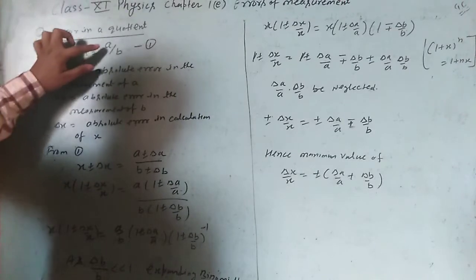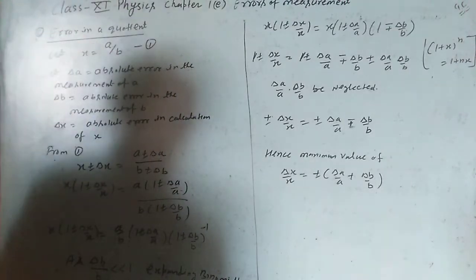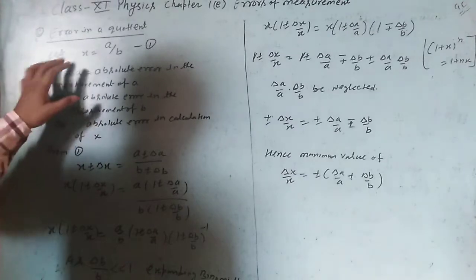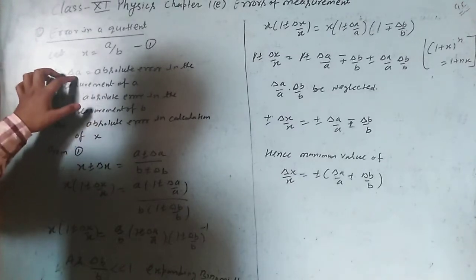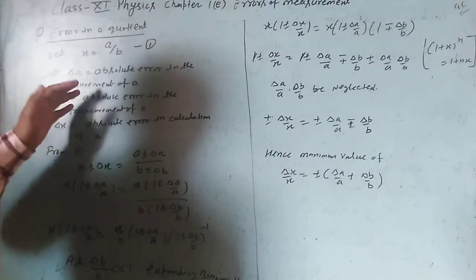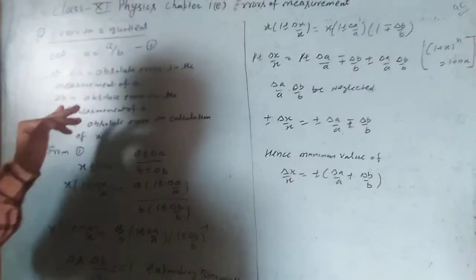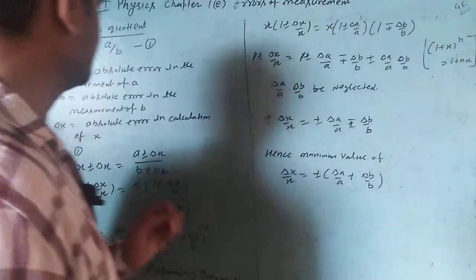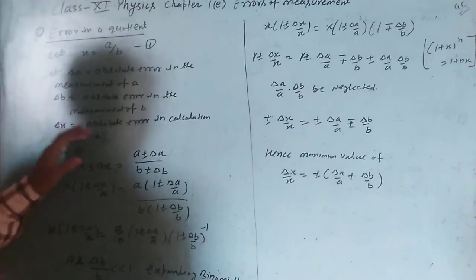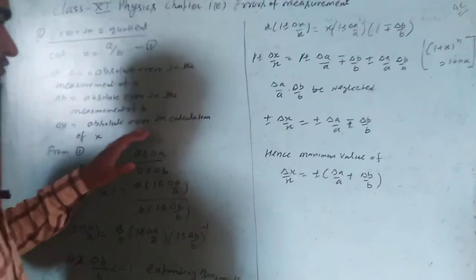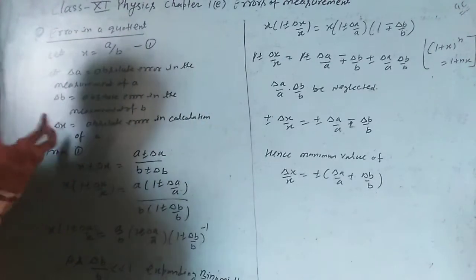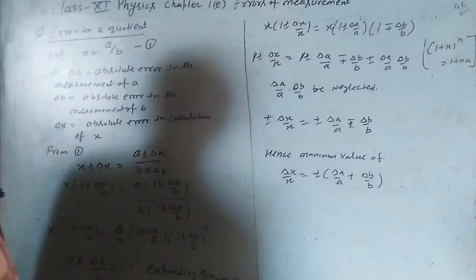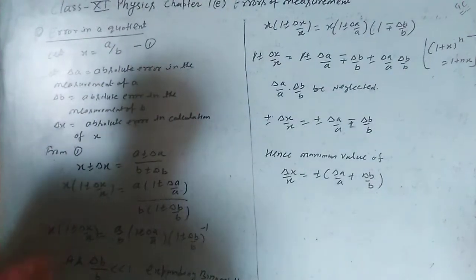Let x equal to a upon b. Delta a is the absolute error in the measurement of a, and delta b is the absolute error in the measurement of b. Delta x is the absolute error in the quotient of a and b, that is, in x. From equation 1: